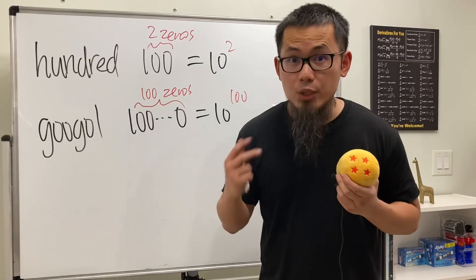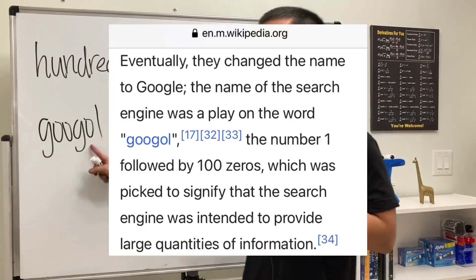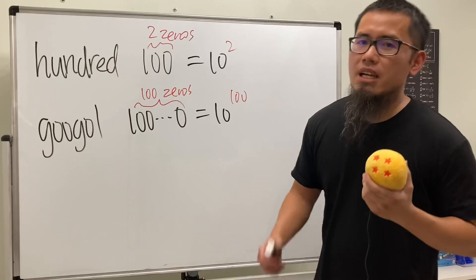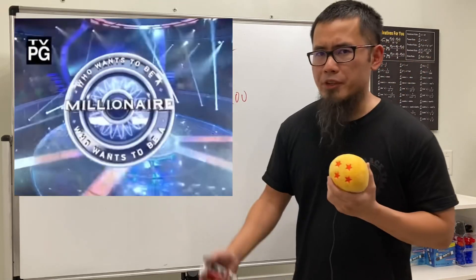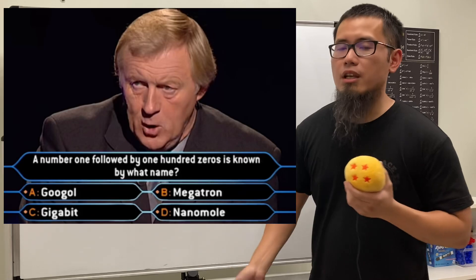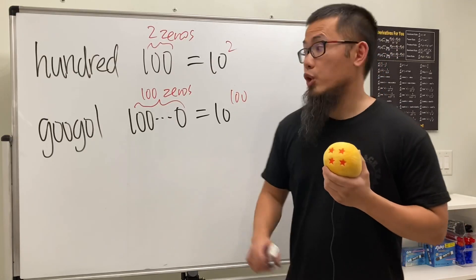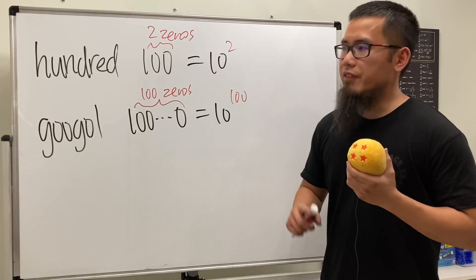And the second story is that there was one time the show Who Wants to Be a Millionaire, they actually put this down as their last question. So if you want to win one million pounds, you will have to know what googol is.